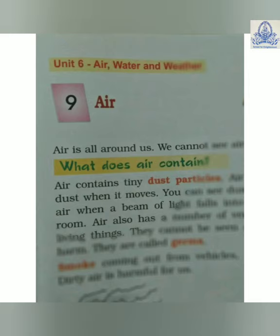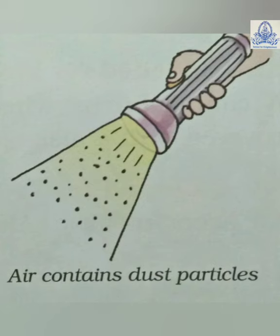Air is all around us. We cannot see air but we can feel it. What does the air contain? For this, you will take a torch and observe the dark room. In the dark room, when you switch on the torch, you will find the dust particles. So, air contains tiny dust particles.